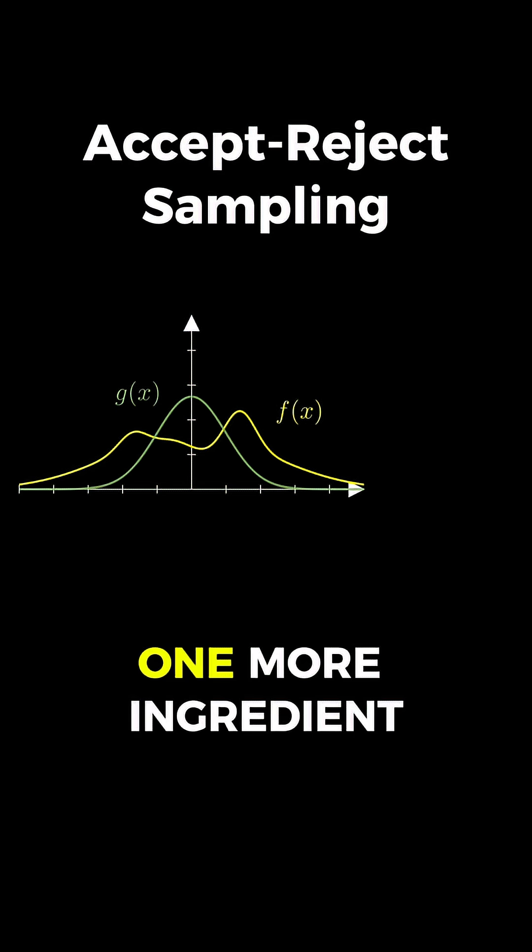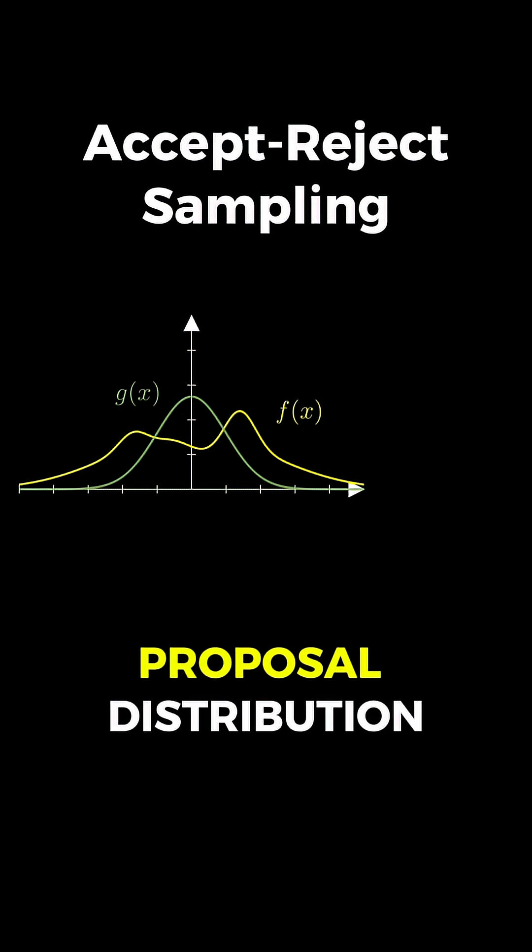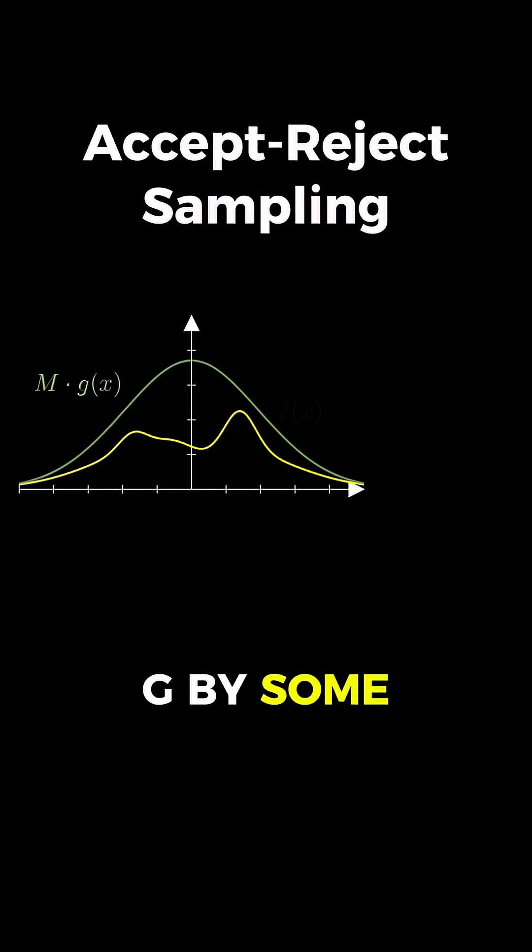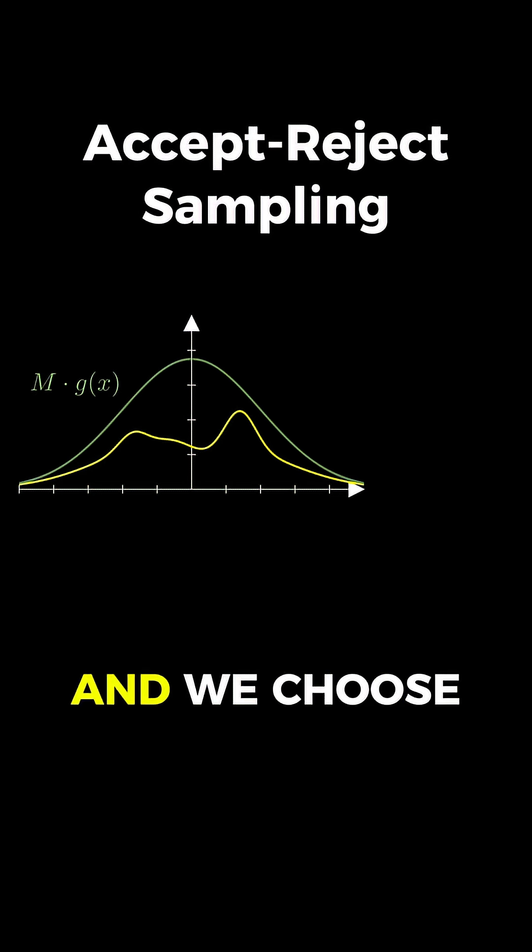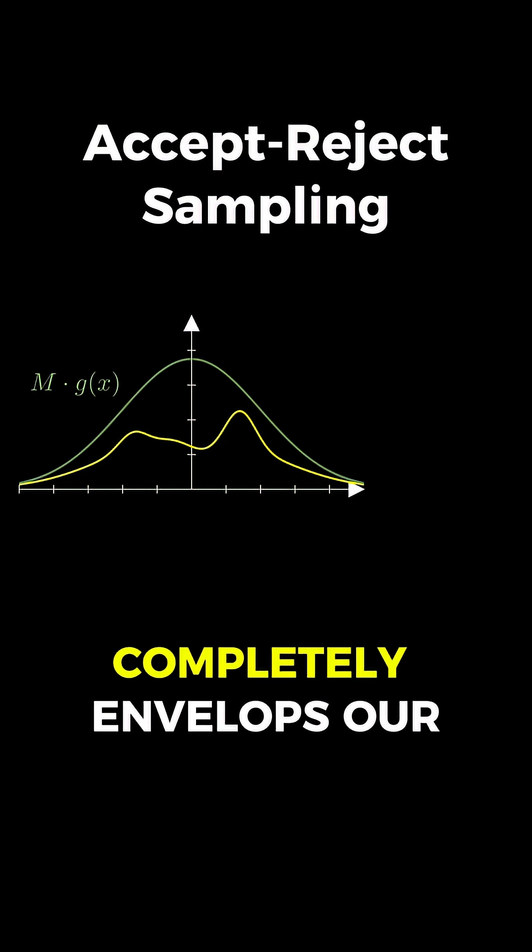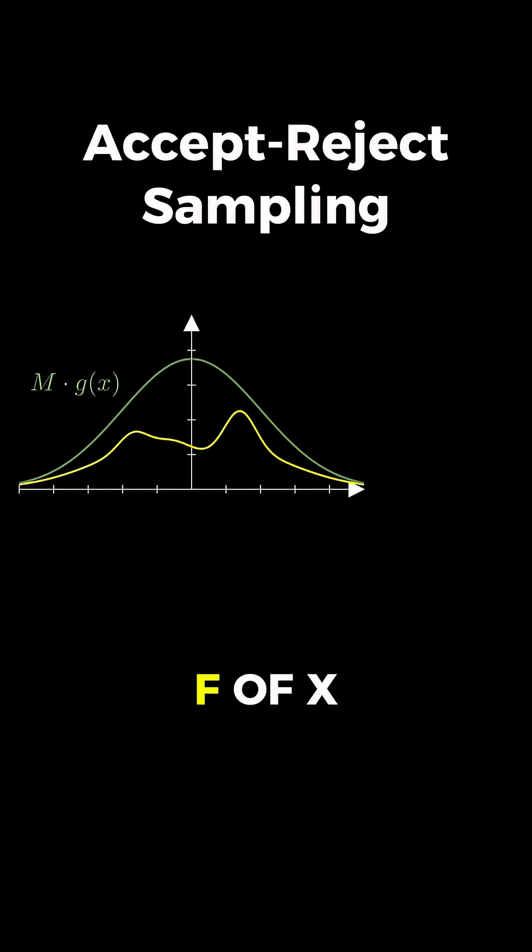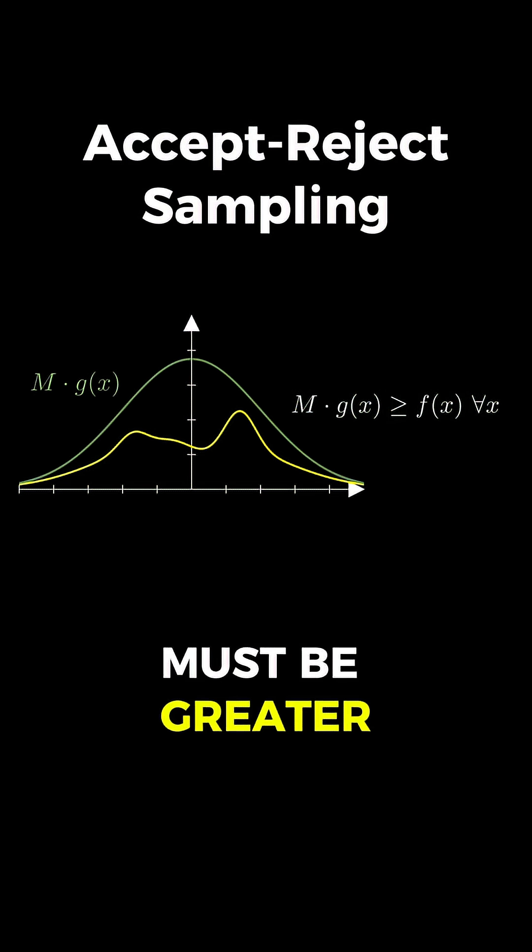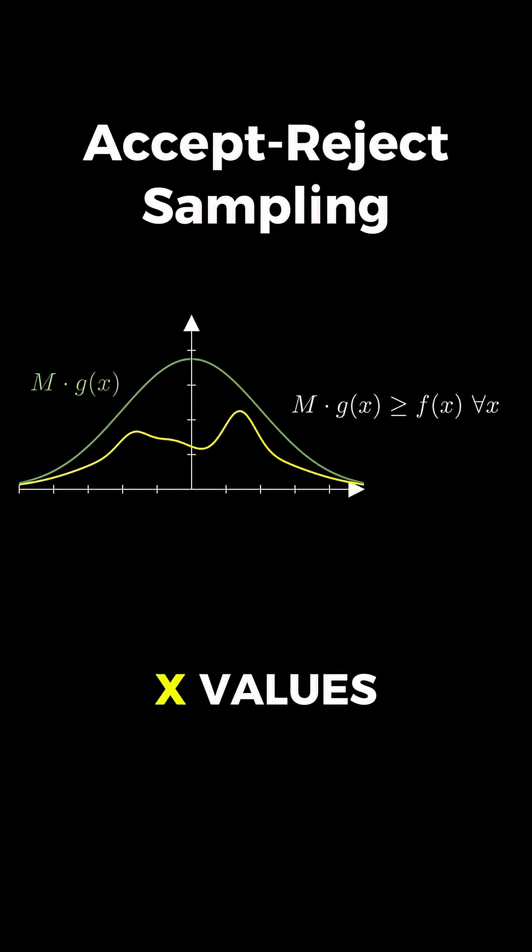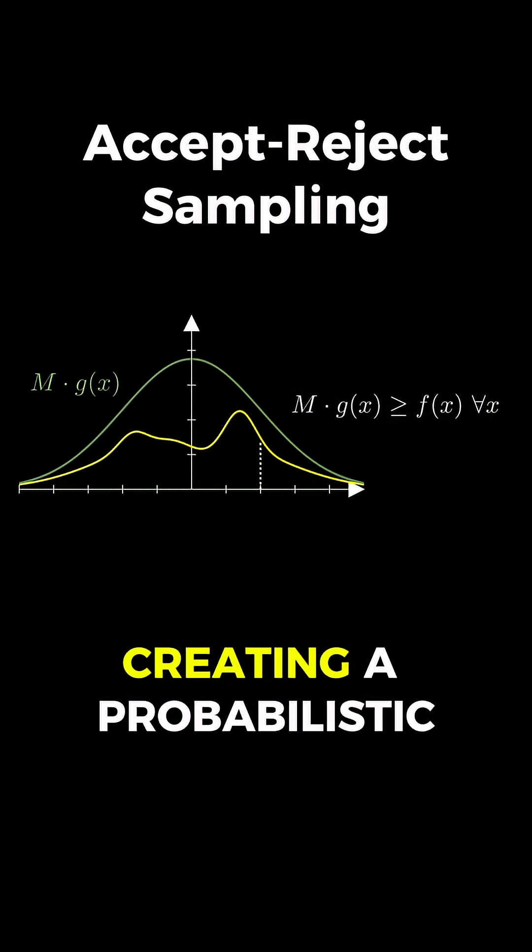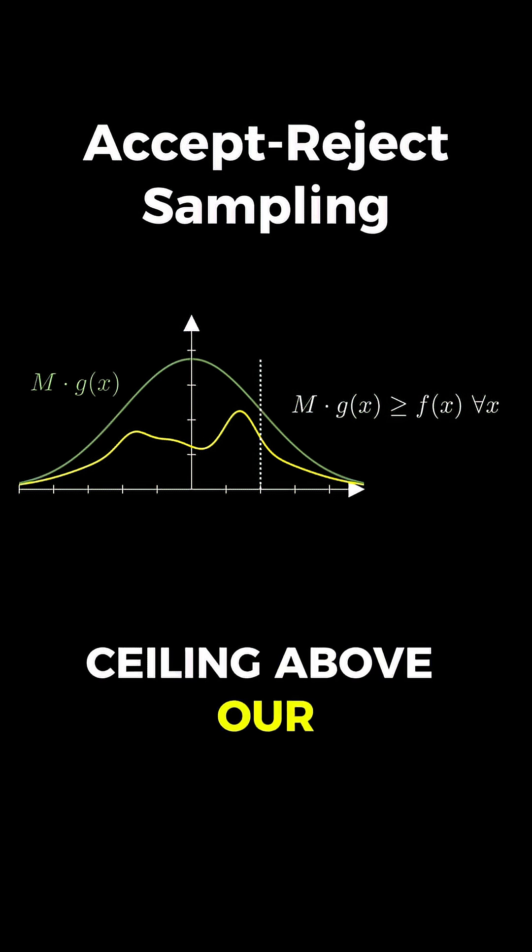But we need one more ingredient: we have to scale up our proposal distribution g by some constant m, creating m times g of x. And we choose m large enough so that this scaled version completely envelops our target function f of x everywhere, meaning m times g of x must be greater than or equal to f of x for all possible x values, essentially creating a probabilistic ceiling above our target.